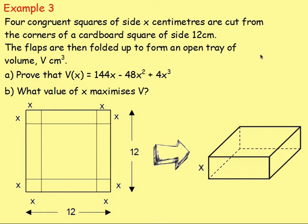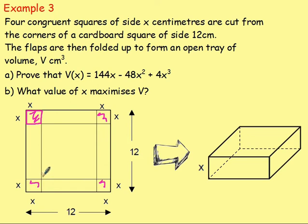Example three: four congruent squares of side x centimetres are cut from the corners of a cardboard square of side 12 centimetres. The flaps are folded up to form an open tray of volume V. Part a: prove that V = 144x minus 48x² plus 4x³. Part b: find the value of x that maximizes V. The diagrams show the squares being cut and the flaps folded up to create the open tray.